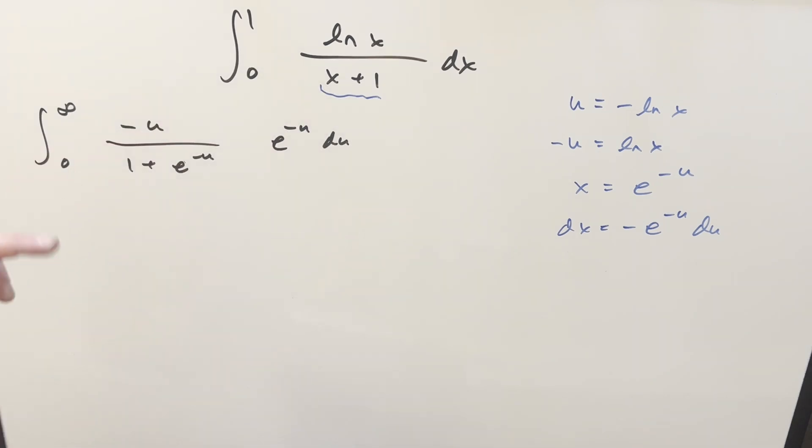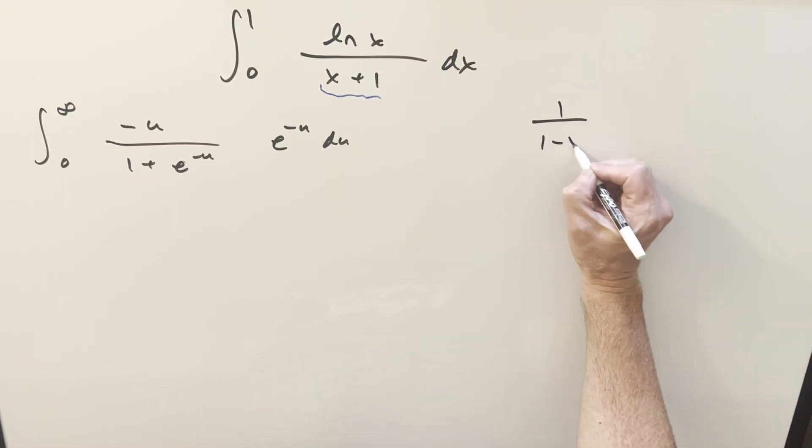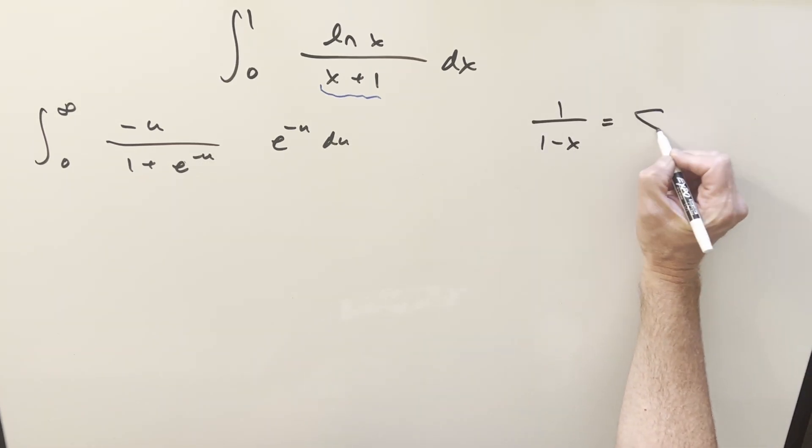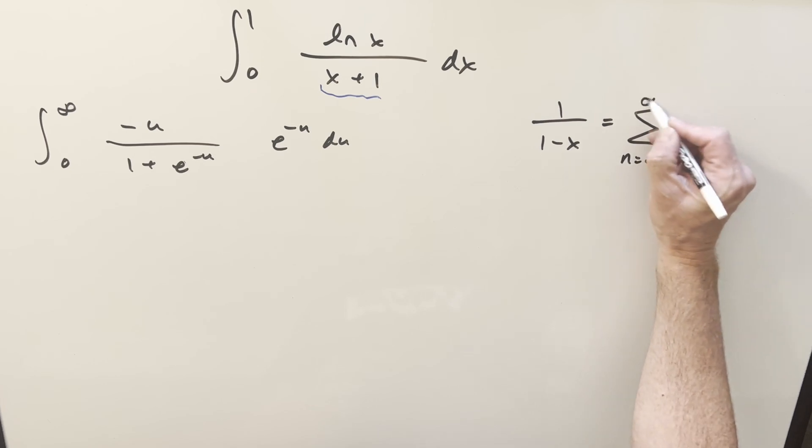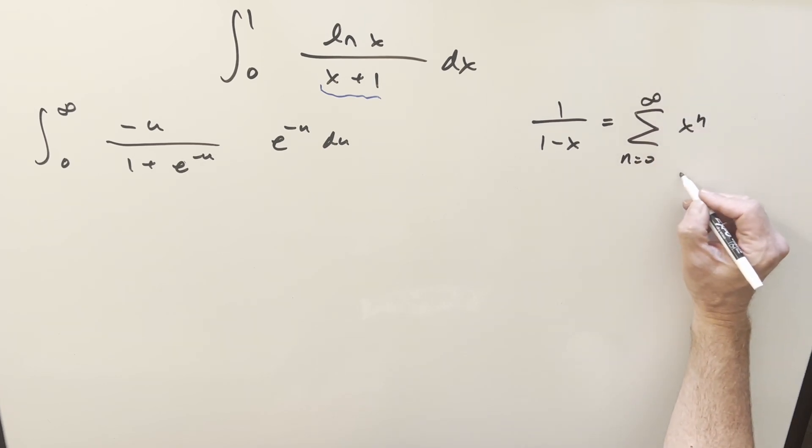And now we don't have the x anymore but we can still do geometric series on this. The way it's going to work, let's look at our geometric series formula. So if we have one over one minus x, this is going to be the same thing as the sum from zero to infinity of x to the n when absolute value of x is less than one.